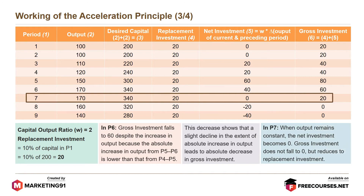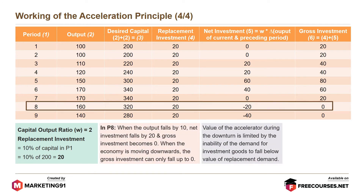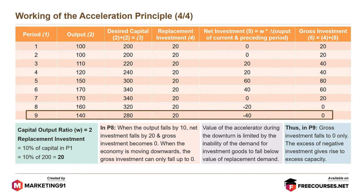In P-7, when the output remains constant, the net investment becomes 0. Gross investment does not fall to 0 but reduces to replacement investment. In P-8, when the output falls by 10, the net investment falls by 20 and gross investment becomes 0. When the economy is moving downwards, the gross investment can fall only up to 0. The value of the accelerator during the downturn is limited by the inability of investment demand to fall below replacement demand. Thus in P-9, gross investment falls to 0 only, and the excess of negative investment gives rise to excess capacity.